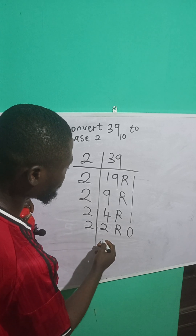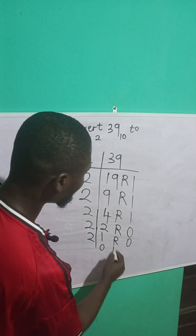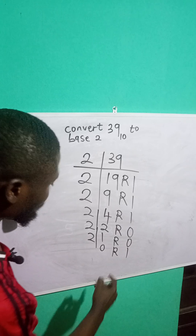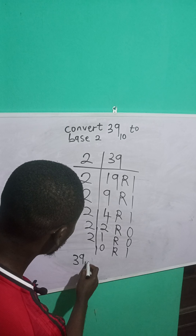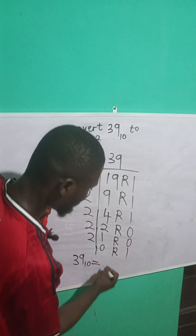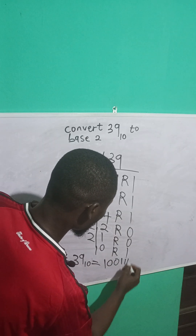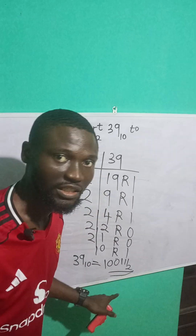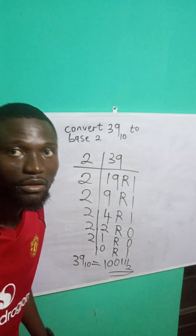2 divides 2 is 1 remainder 0, and 2 divides 1 is 0 remainder 1. Once we get to 0 we stop dividing. Therefore, 39 in base 10 is equal to 100111 in base 2 — you start counting the remainders from the bottom up.